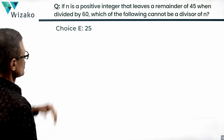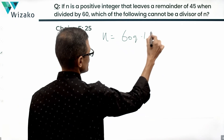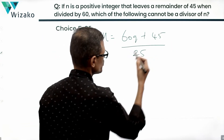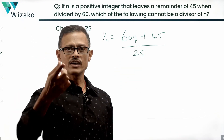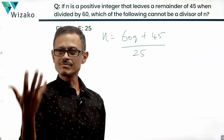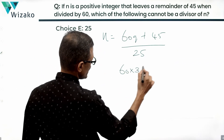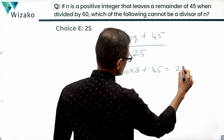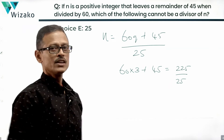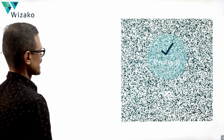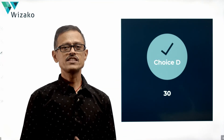If you want, you can also try option E — this is a little more interesting. We have n = 60q + 45. Is it divisible by 25? You need to search for values. If q = 3, then 60 × 3 + 45 = 180 + 45 = 225, which is divisible by 25. So we found a case where it will divide n, and this is also not the answer. Choice D — 30 — is the correct answer, as it is the number which can never be a divisor of 60q + 45.